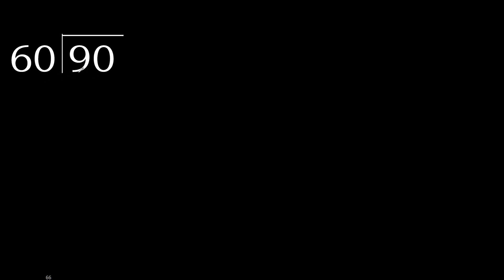90 divided by 60. 9 is less, therefore next. 90 is not less, therefore with 90. 60 multiplied by which number is nearest to 90 but not greater? 60 multiplied by 2 —